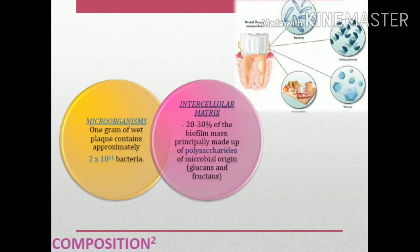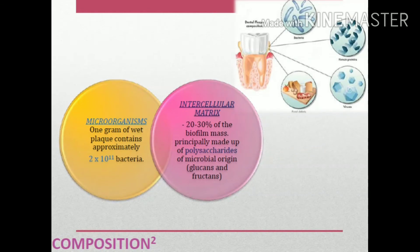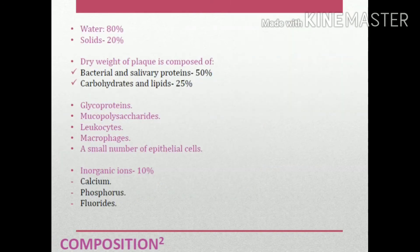The composition of plaque consists mainly of microorganisms and intercellular matrix. One gram of wet plaque contains 2×10¹¹ bacteria. The intercellular matrix constitutes 20–30% of the biofilm mass and is principally polysaccharides of microbial origin — glucans and fructans. Water makes up 80% and solids 20%. The dry weight is composed of bacterial and salivary proteins (50%) and carbohydrates and lipids (25%).